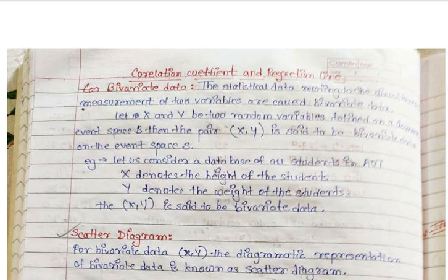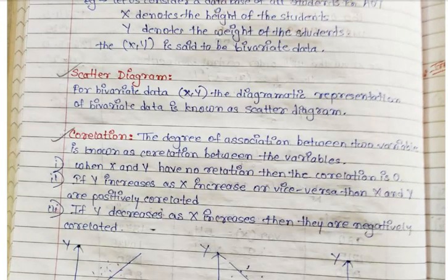When measuring height and weight, we take heights as one column and weight as another column. For a single student, say height is 5 feet and weight is 50 kg, the point (5, 50) represents a point in a two-dimensional coordinate system. The diagram of this bivariate data is known as a scattered diagram.